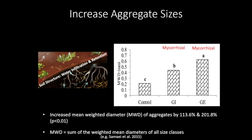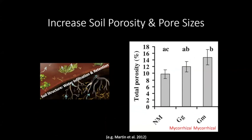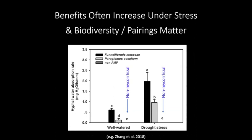Mycorrhizae double and triple aggregate sizes and also improve aggregate stability — the mycorrhizal version is closest to the engineering solution. They also increase soil porosity and pore sizes, tested across two mycorrhizal species versus non-mycorrhizal controls in greenhouse conditions. As a result, they increase plant available water. One of the most interesting findings that pops up in the literature is that the benefits tend to increase under stress — which is particularly relevant when thinking about climate change and drought.